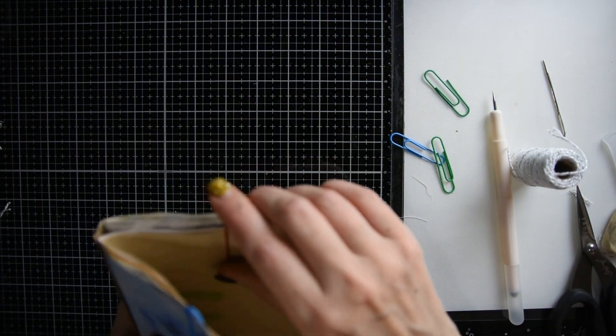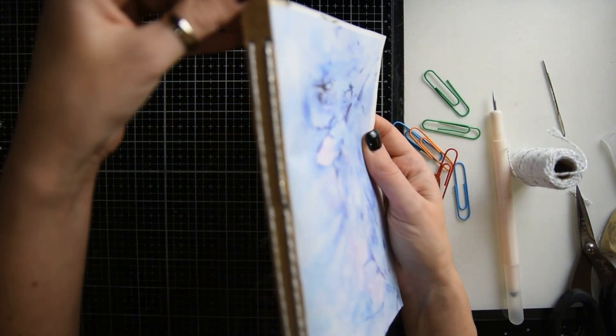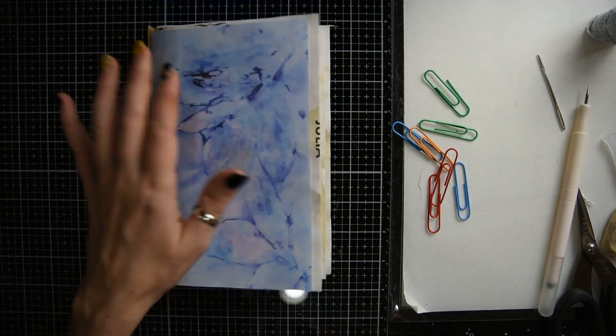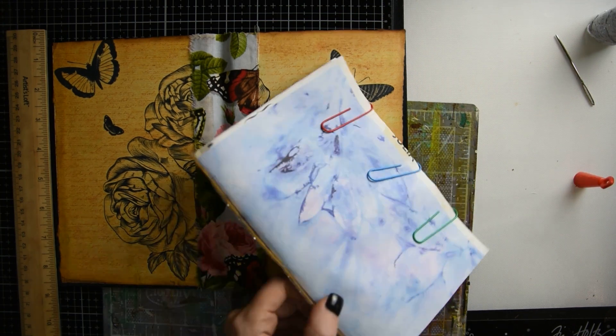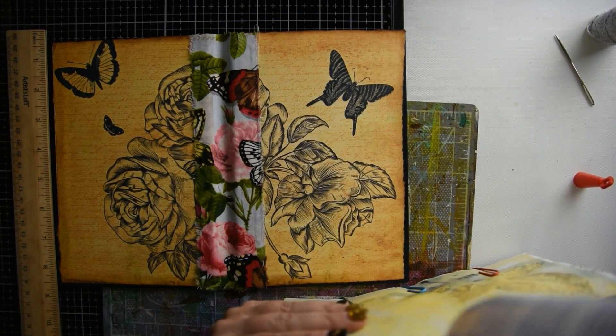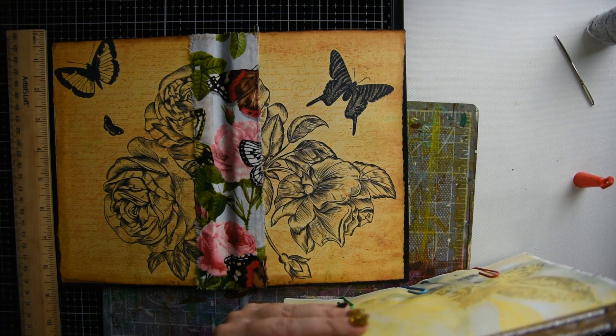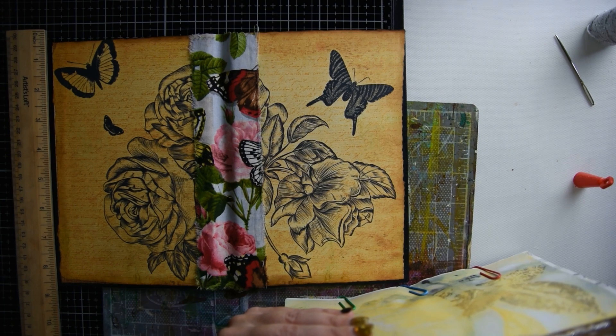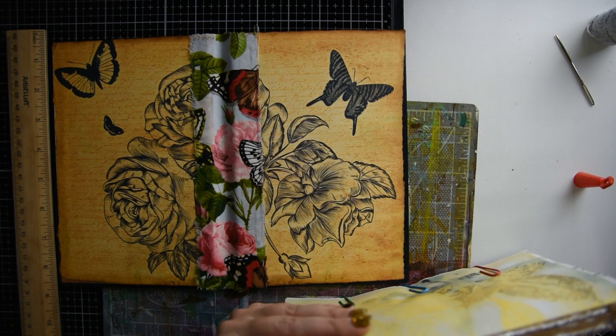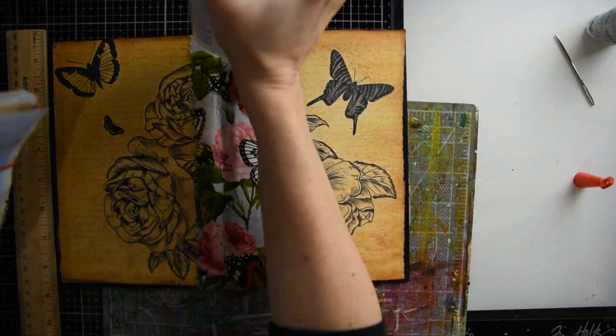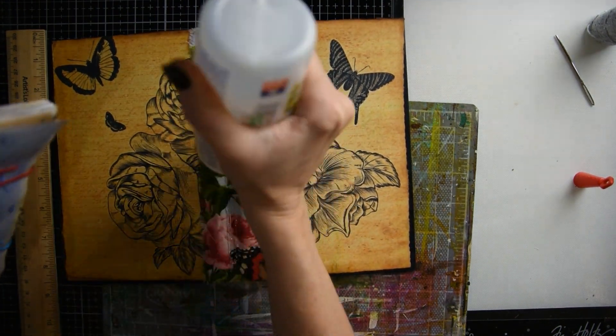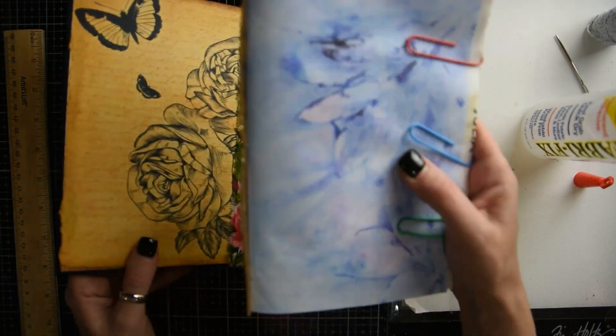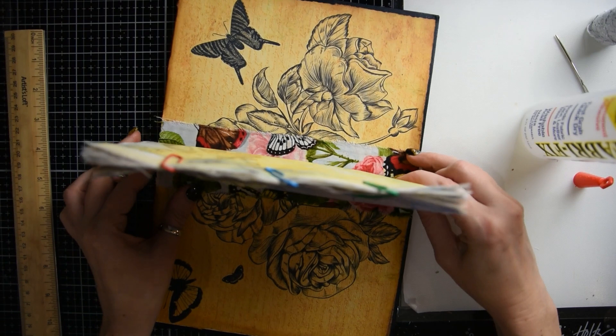Okay, and then we're going to take all the paperclips out and here we have our two signatures in our spine. The next step is to get your Fabri-Tac glue out and put a good amount of glue on the spine. And then you're going to place it in the middle and you're going to make sure that you have it all lined up really good. And then I normally leave my book sitting straight up for about an hour.